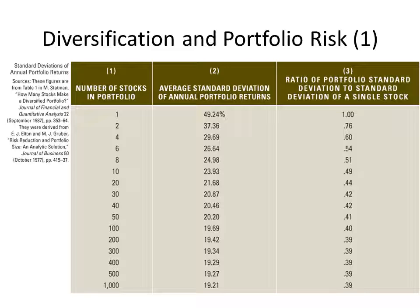Doubling to four stocks brought the standard deviation down to 29.69%, which is 60% the risk of a single stock portfolio. But notice — we doubled the stocks again, yet risk only dropped from 76% to 60%, not another 24%. This is the first thing we need to know about diversification: increasing numbers of assets reduces risk, but at a decreasing rate. We're going to see this become asymptotic — getting closer and closer to a value but not quite touching it.